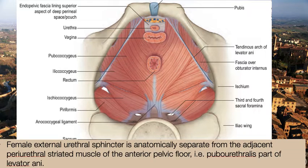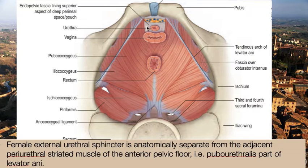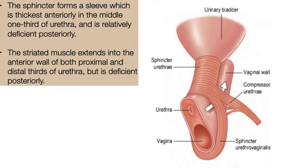The female external urethral sphincter is anatomically separate from the adjacent periurethral striated muscle of the anterior pelvic floor, that is the pubourethralis part of the levator ani muscle. The sphincter forms a sleeve which is thickest anteriorly in the middle one-third of the urethra and relatively deficient posteriorly. The striated muscles extend into the anterior wall of both the proximal and distal parts of the urethra but are deficient posteriorly.